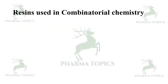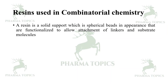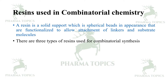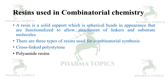Let us see the resins used in combinatorial chemistry. A resin is a solid support which consists of spherical beads that are functionalized to allow attachment of linkers and substrate molecules. There are three types of resins used for combinatorial synthesis: cross-linked polystyrene, polyamide resins, and polystyrene polyethylene glycol resins.